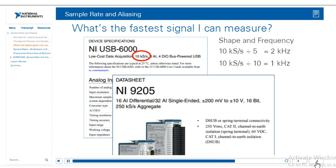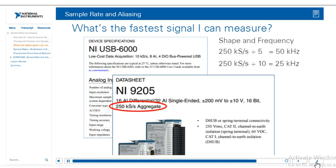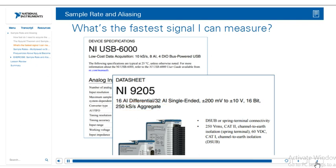Using the same principle with the 9205, we can get an accurate measurement that includes shape and frequency of a 50 kilohertz signal, even though it can take up to 250,000 samples per second. This is important to keep in mind when thinking of the signals that you'll be measuring.